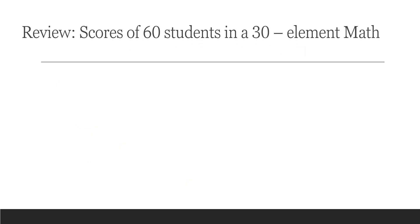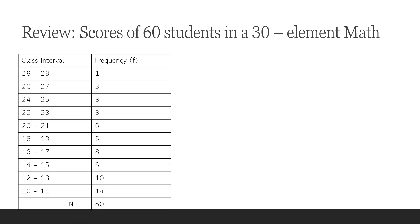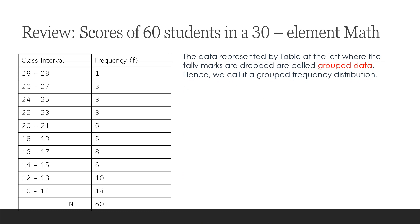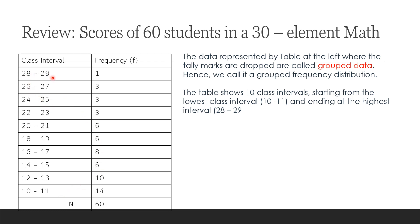Let us review our past lesson. Before we had the scores of 60 students in a 30-element math quiz. Remember this class interval and the frequency. The data represented by the table at the left where the tally marks are dropped are called grouped data. This is the grouped frequency distribution. This table has class intervals, starting from 10 to 11 and ending to the highest which is 28 to 29.